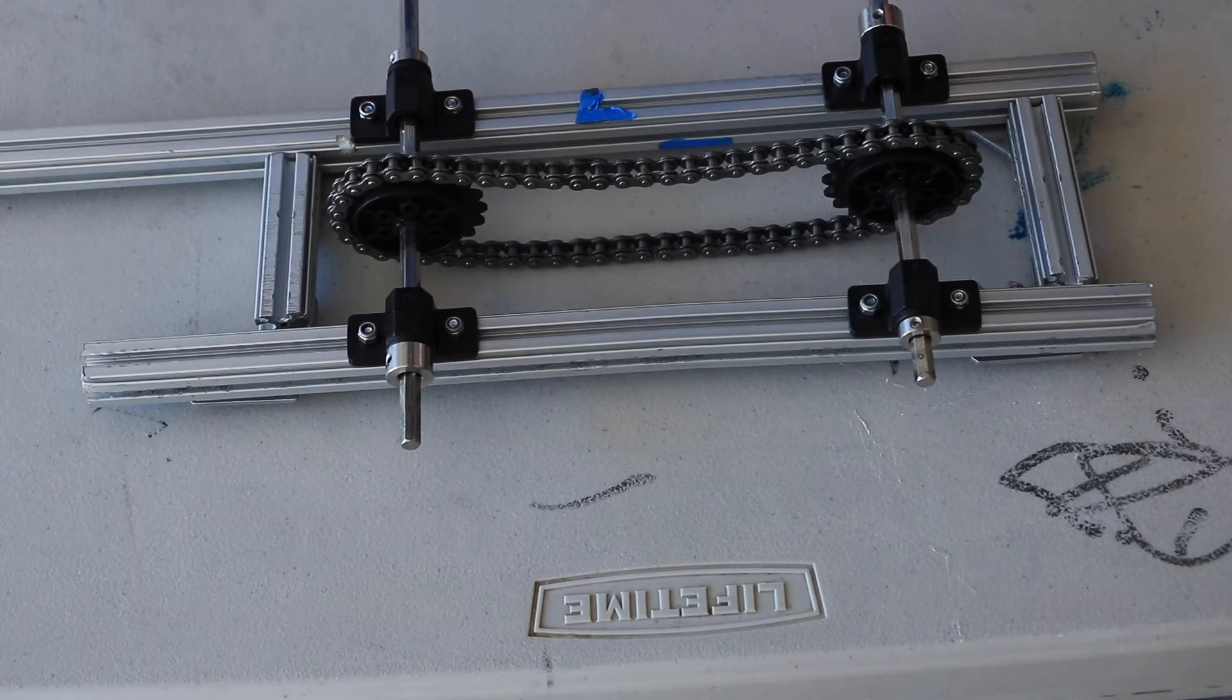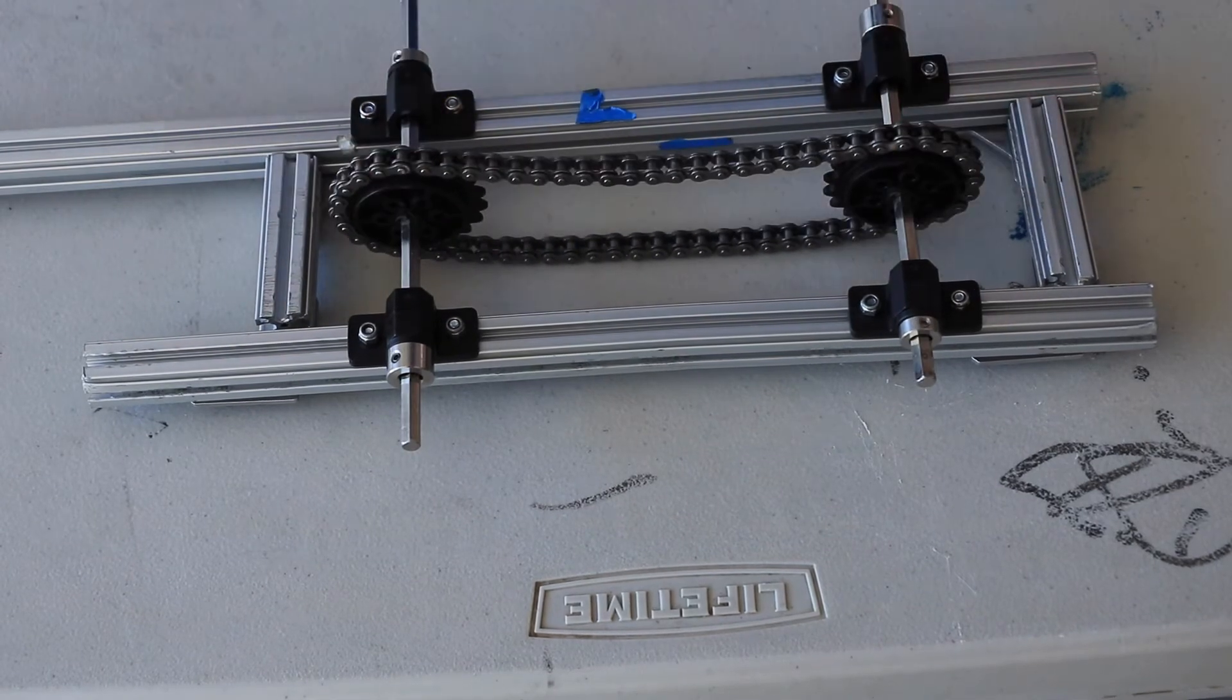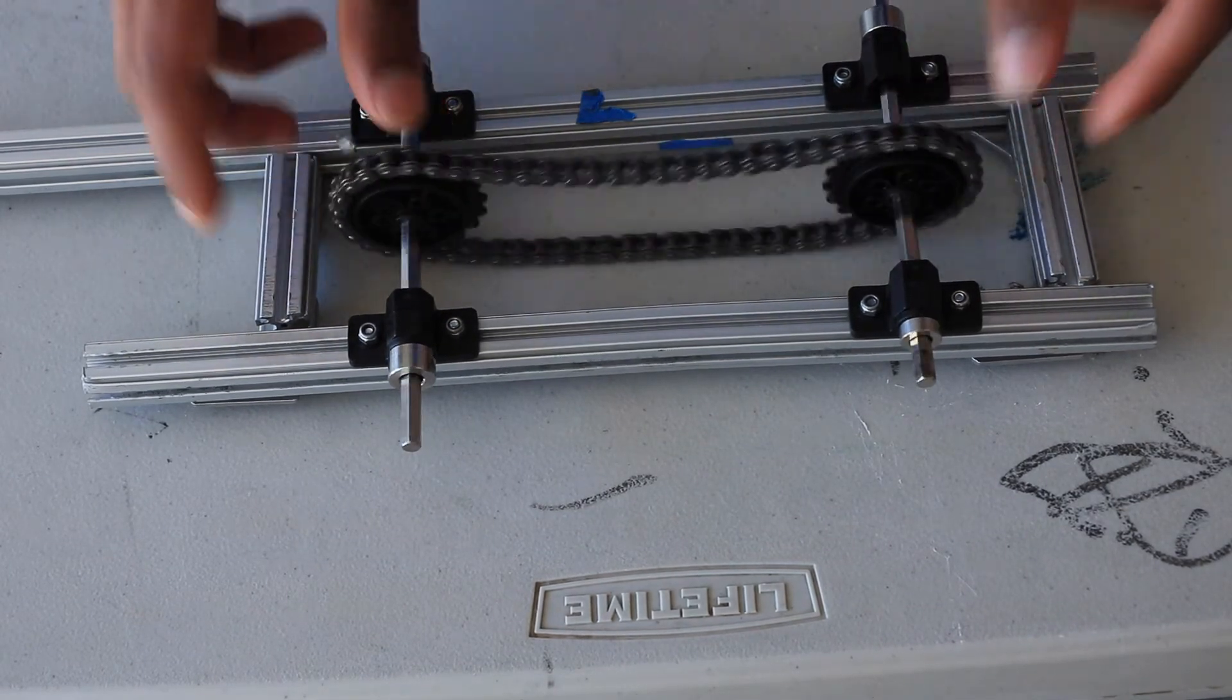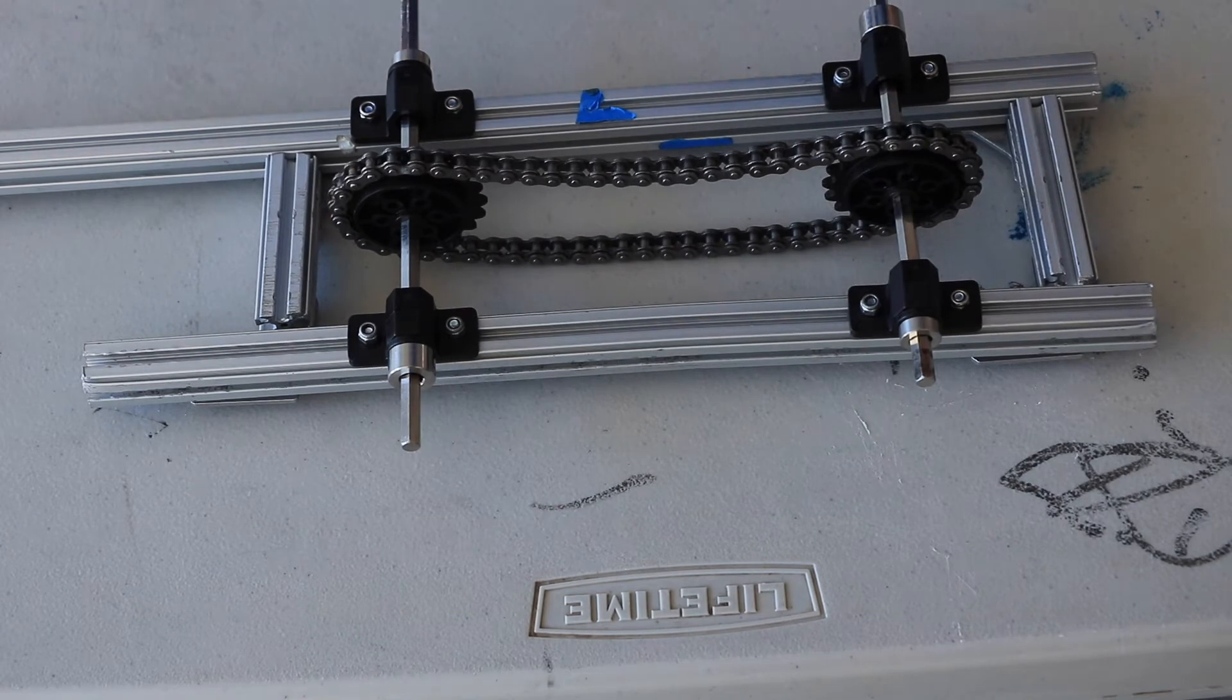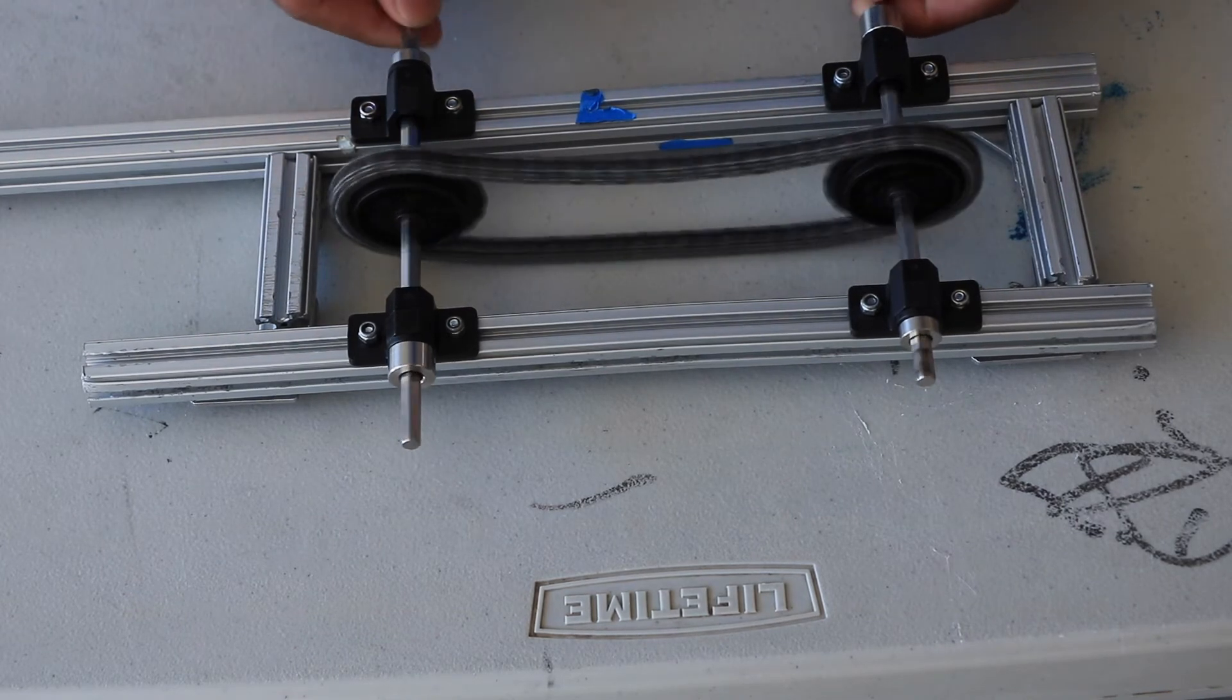Here you can see the chain has different links, and these links interlock with the teeth on the sprocket. This is similar to gears in that they have teeth. However, unlike gears, these can transfer motion over long distances and both axles rotate in the same direction.